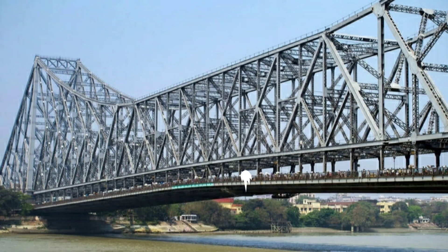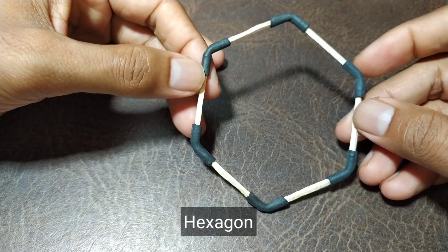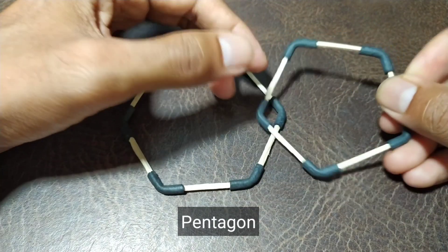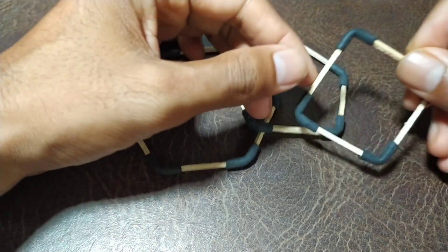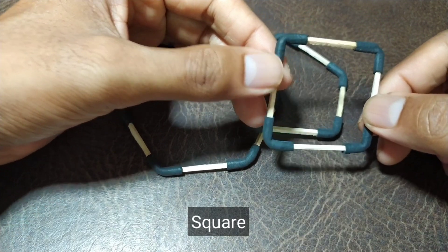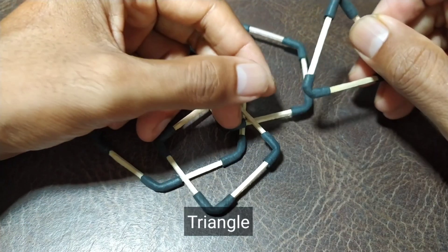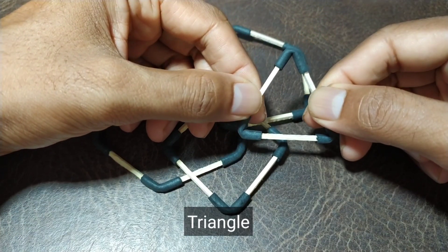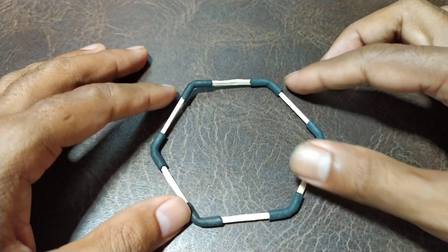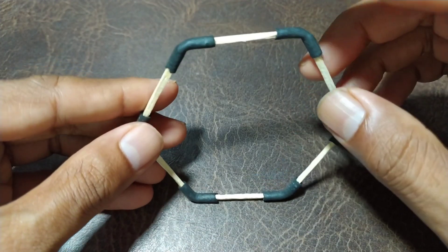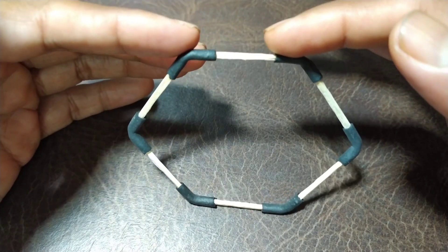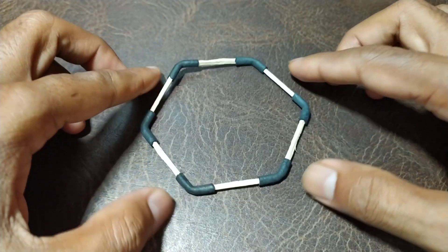I prepared some shapes for you. We have a hexagon, pentagon, a square, and a triangle. If we put pressure on this hexagon, then we'll find that it keeps on changing its shape like this.